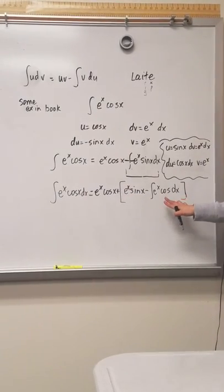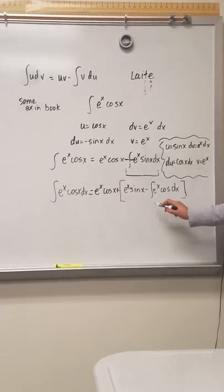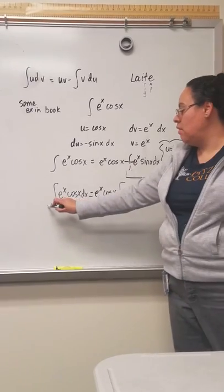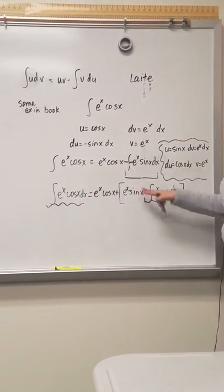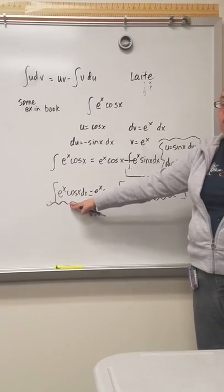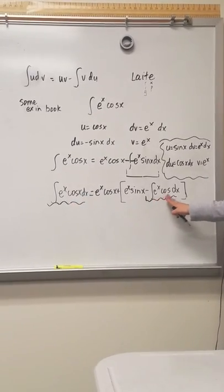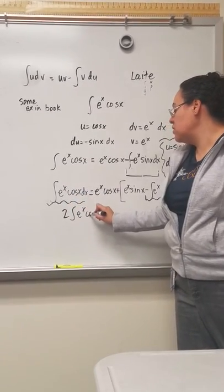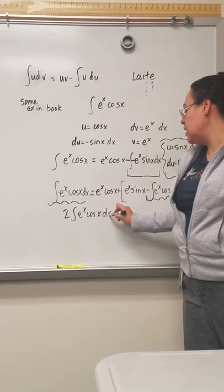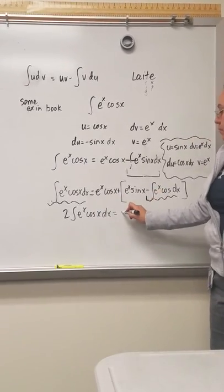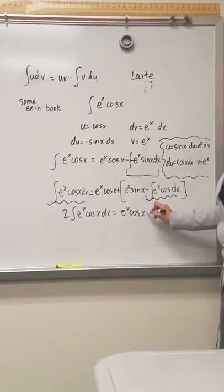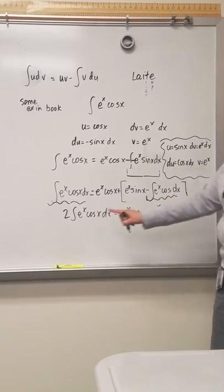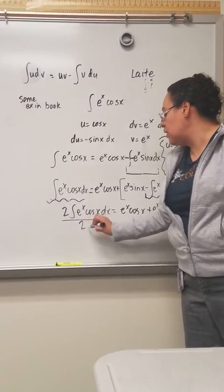So now what I want you to see is I basically have this here and that here. And I'm going to go ahead and move this to this side as if it were an algebraic problem. So I'm going to add the integral of this to this side and it's going to create two integral e to the x cosine x dx and it's going to equal to this thing right here.